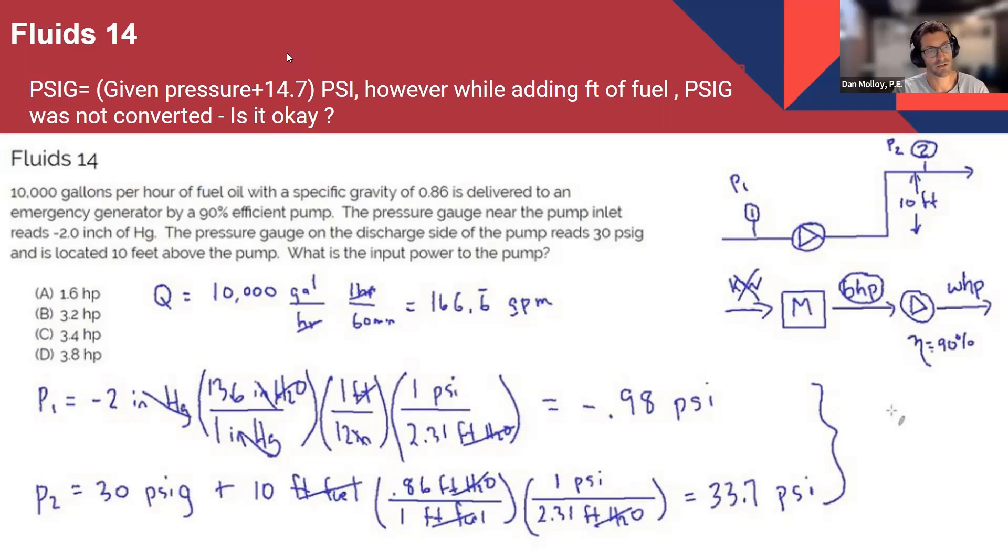Is the goal to get fit of water? No, this problem happened was I, so if you see that PSIG, right? Like 30 PSIG and the 14.7 was not added. That's my question was, why we didn't add 14.7? That's all.